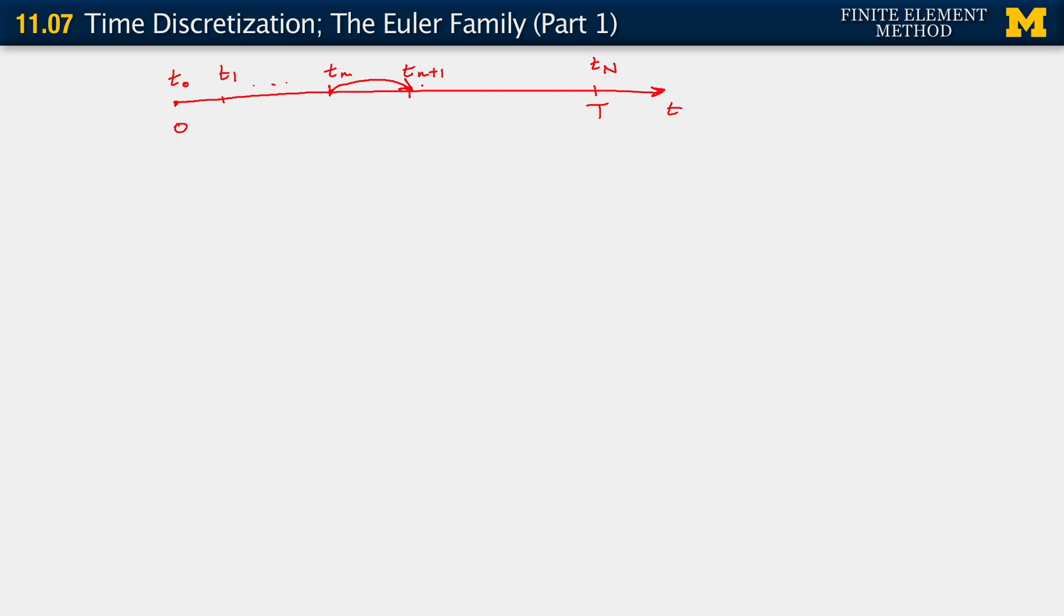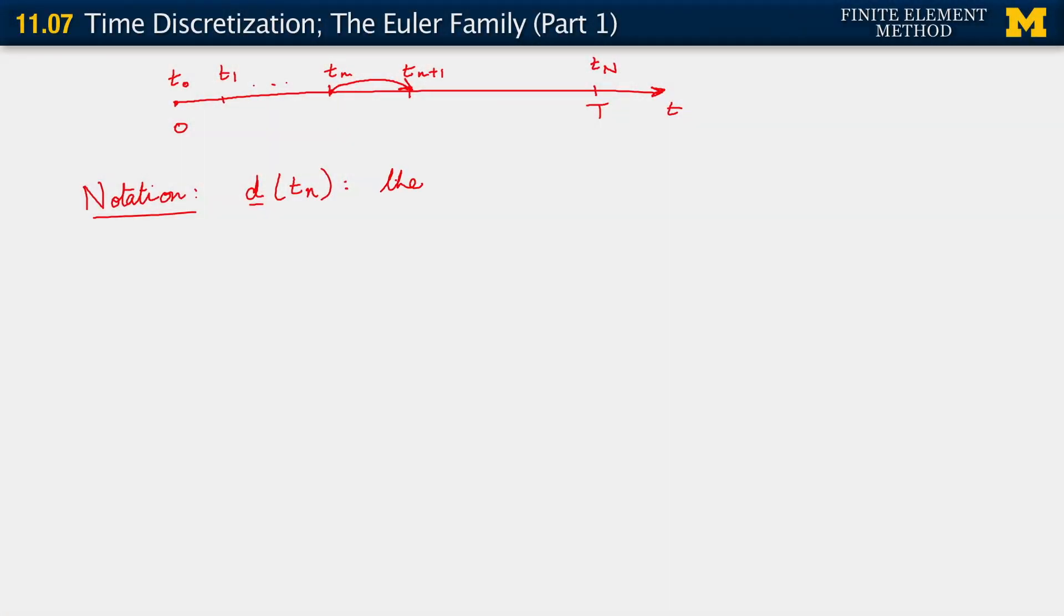Some more notation. When I write d at some time tn. What I imply by this notation is the solution vector d, if one were able to do exact integration in time. This is the time exact solution at time, at t equals tn.